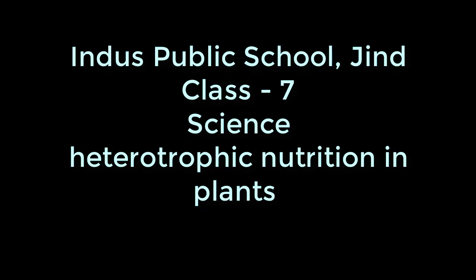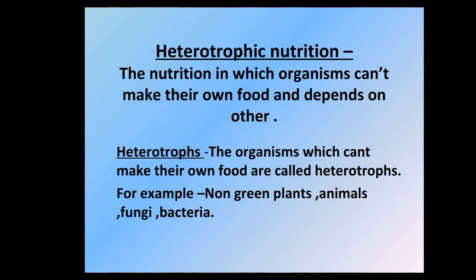Good morning students. In the previous video we completed the first part, autotrophic nutrition in plants. Now moving on to the second part: heterotrophic nutrition in plants. Heterotrophic nutrition is the nutrition in which organisms can't make their own food and depend on other organisms. Heterotrophs depend on plants — the producers — directly or indirectly on autotrophs.